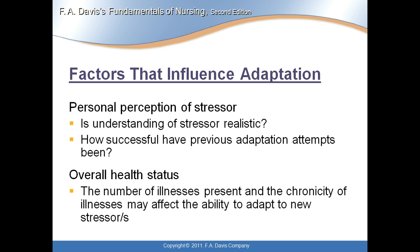Factors that influence adaptation include the personal perception of the stressor — is understanding of the stressor realistic, and how successful have previous adaptation attempts been? There's also overall health status: if a patient has one disease they may easily adjust, but if they have several diseases they may be too overwhelmed. There's also hardiness — some people thrive on stressors. Being able to do very well in urgent situations and problems is hardiness.